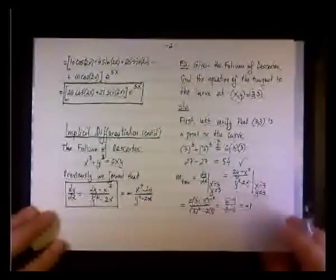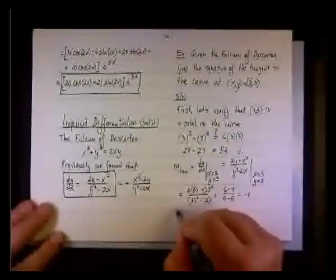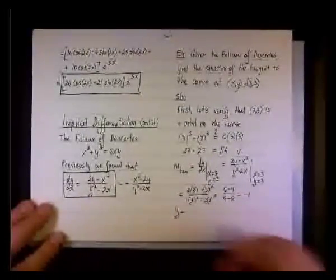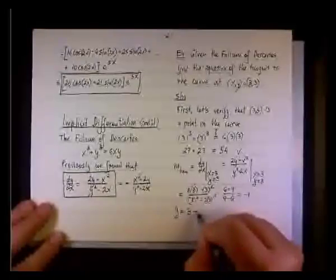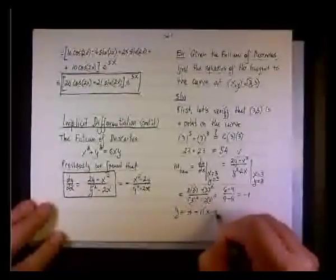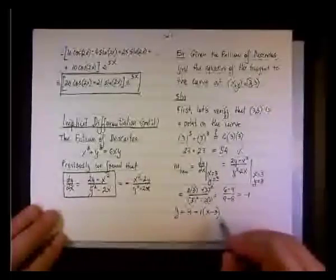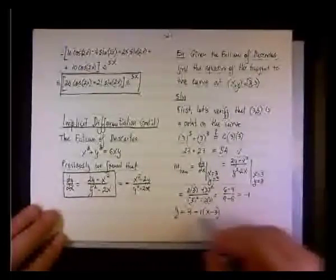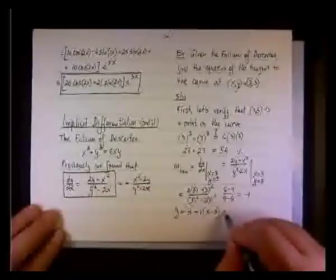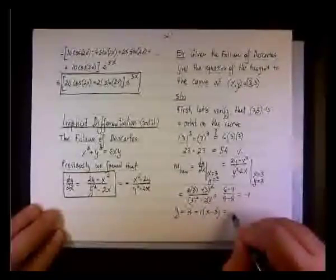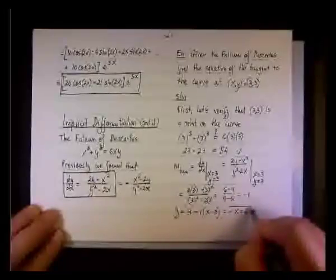So the slope is negative 1. Now we have the point, we have the slope. So we quickly can come up and say y equals 3 minus 1 times x minus 3. This is the modified point slope equation. So we have negative x, and here we have positive 3 and positive 3. So the equation will be negative x plus 6.